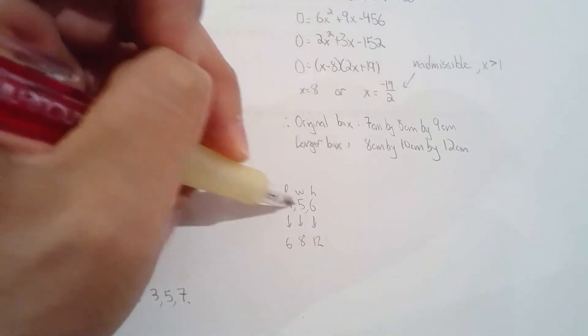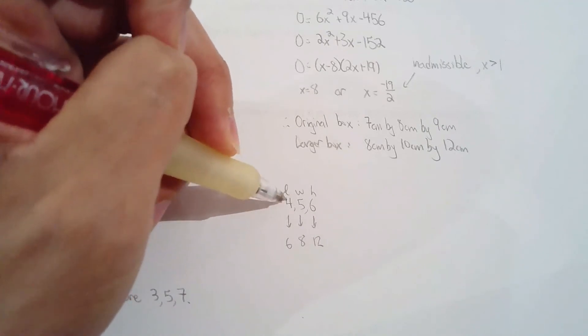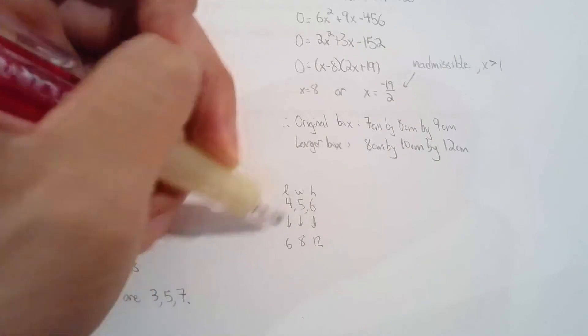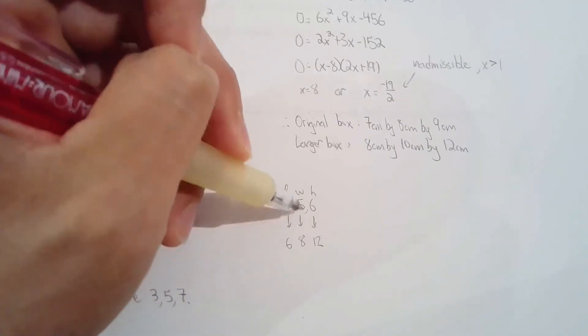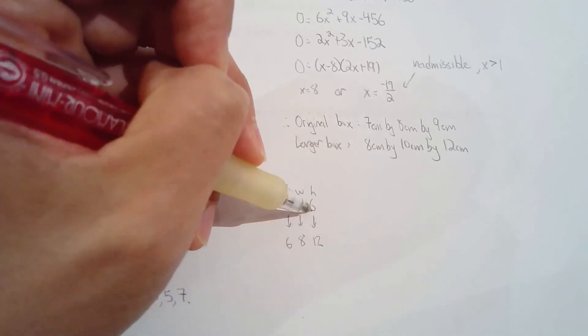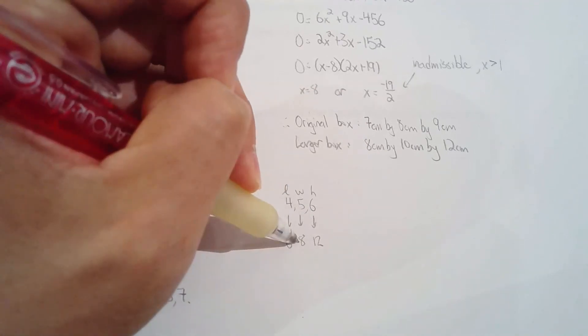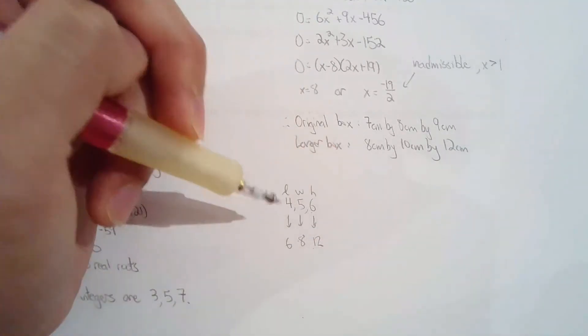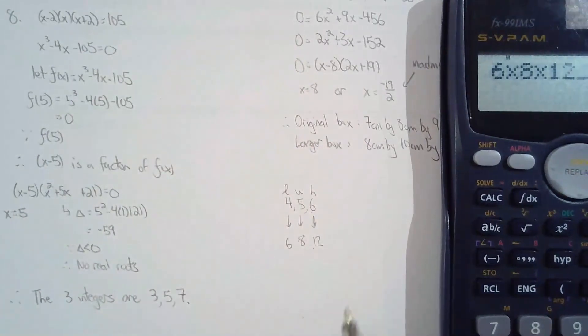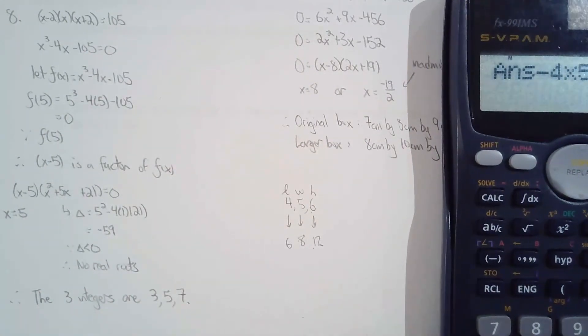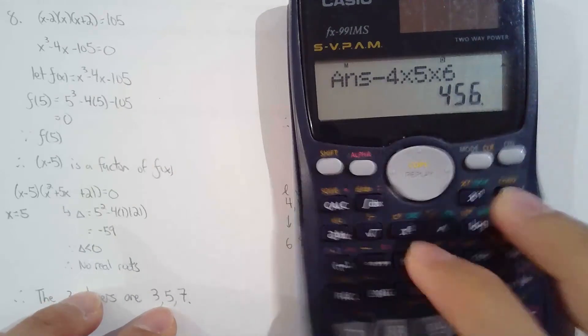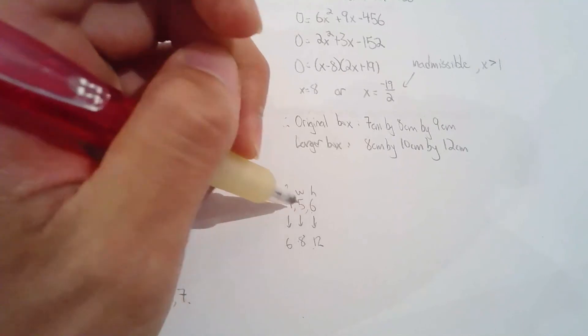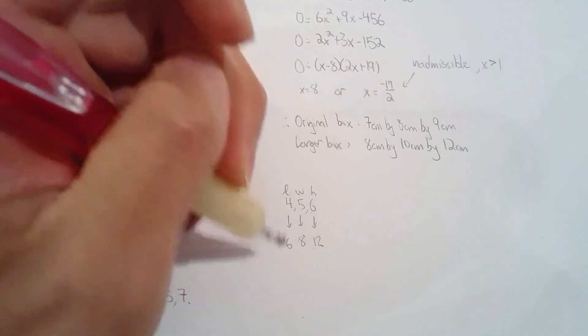One more try. The original box is three consecutive integers, with the length being the smallest and the height being the greatest. The length is increased by 2 centimeters. The width is increased by 3 centimeters. And the height is doubled. And then, the new box is greater by 456 cubic centimeters. With that amount of knowledge, you should be able to solve for the dimensions of the original box and the larger box.